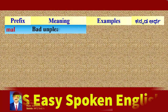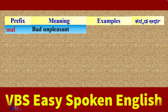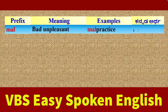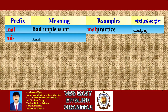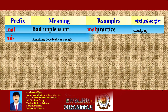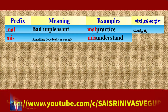Prefix 'Mal': its meaning is 'bad' or 'unpleasant'. Example: Malpractice. Kannada meaning: Duskrutya — bad deed. Prefix 'Mis': its meaning is 'something done badly or wrongly'. Example: Misunderstand. Kannada meaning: Apartha — wrong meaning.